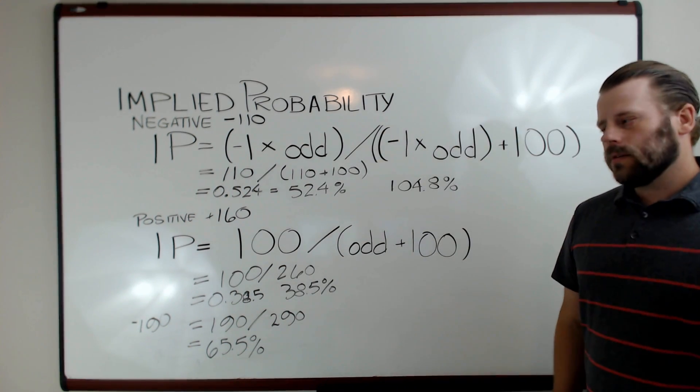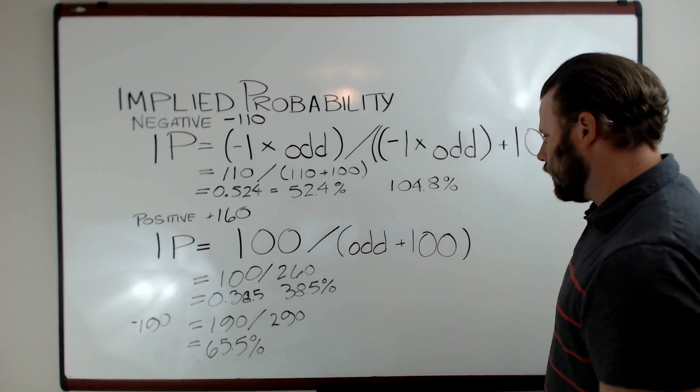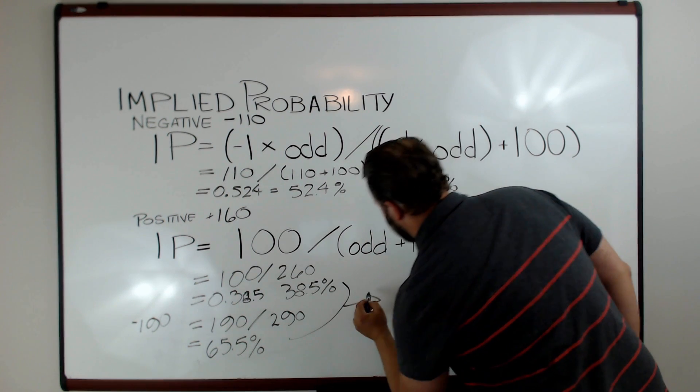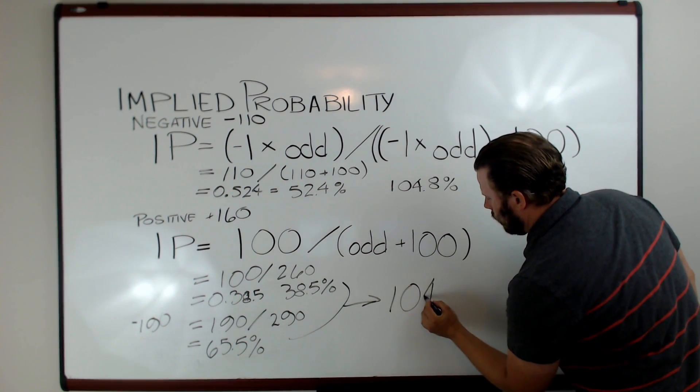You add these two numbers together, because this is the likelihood of your particular event. That's going to give you 104 percent.